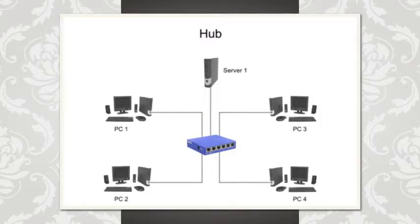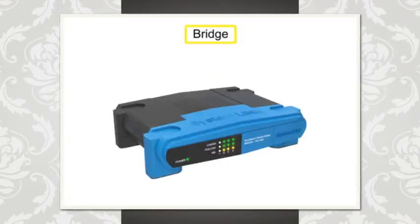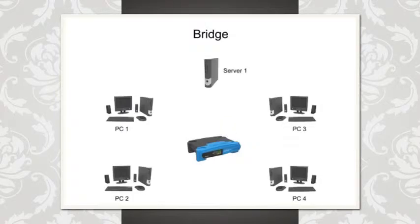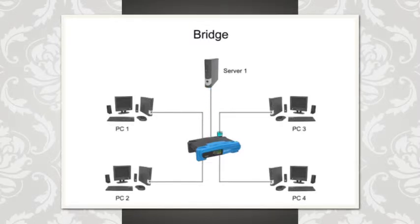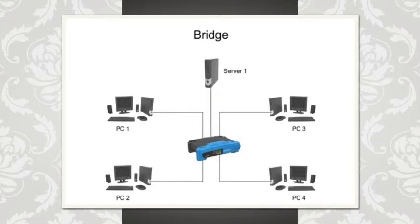Another network backbone device is called a bridge. Network bridges are smart devices that process and record information about signal traffic between devices in the network. The bridge then uses this information to determine the most efficient path for data transfer between a transmitting and a receiving device, without having to send it to every device in the network.